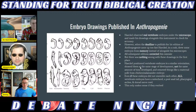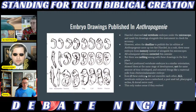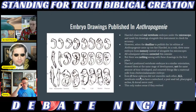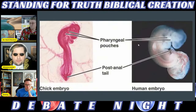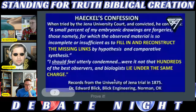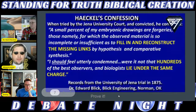Even if these embryos didn't resemble each other, all vertebrate embryos share categories: a notochord, a post-anal tail, pharyngeal arches or gill slits, and a dorsal nerve cord. This would only make sense if these creatures evolved. Here we can see photographs — not drawings — showing the pharyngeal arches and post-anal tail in human and chick embryos.